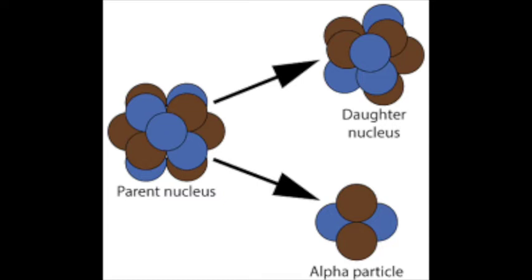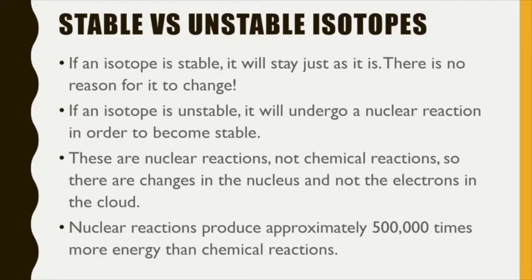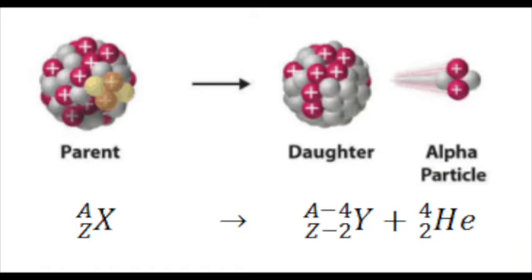We know that elements have atoms, and atoms of several elements have so many neutrons that they become unstable isotopes. These unstable isotopes decay, and when they decay, they remove some of their particles in order to become stable again. So we start with unstable isotopes and end up with stable isotopes. This process is called radioactive decay.